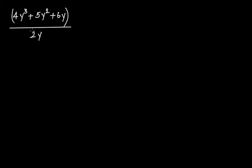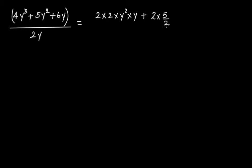Now if you look here you have 2y. We can write 4y³ as 2 × 2 × y² × y. Then we have plus 5y². Let's take 2 here and 5/2 — that is, you multiply and divide by 2. Basically what you have done is 2/2 × 5 × y².